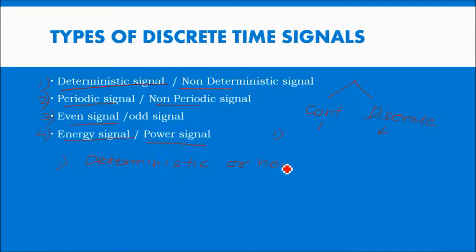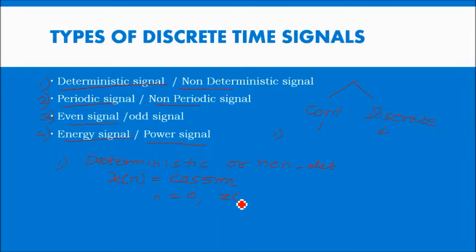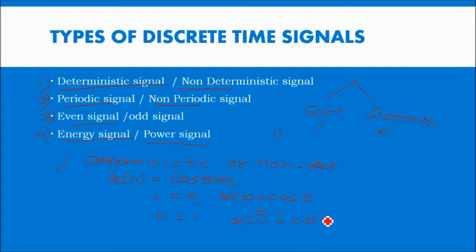Deterministic means we can determine the value of the signal at any point of time. For example, x(n) = cos(5πn). If I put n = 0, I get x(0) = cos(0) = 1. If I put n = 1, x(1) = cos(5π). Based on that, I can calculate the value at any point of time, hence this signal is called a deterministic signal.